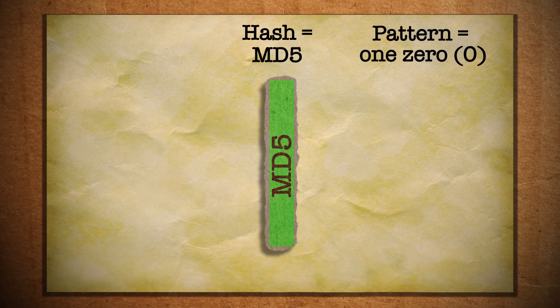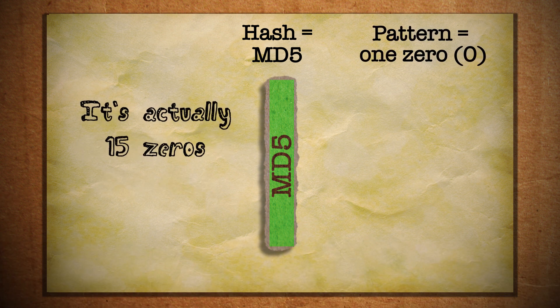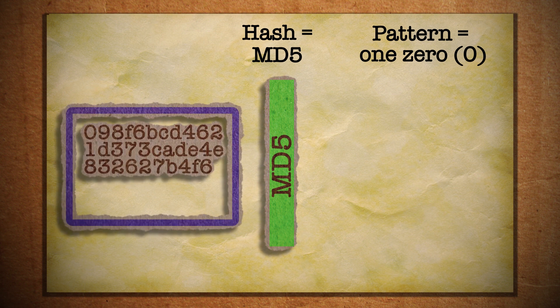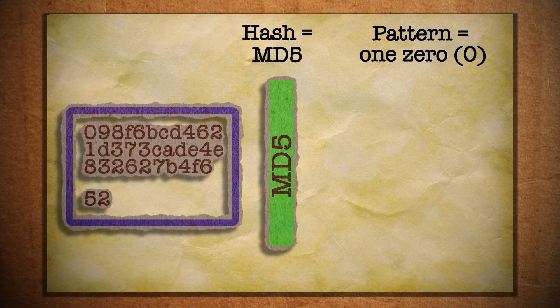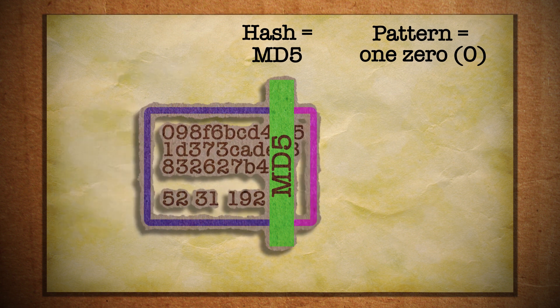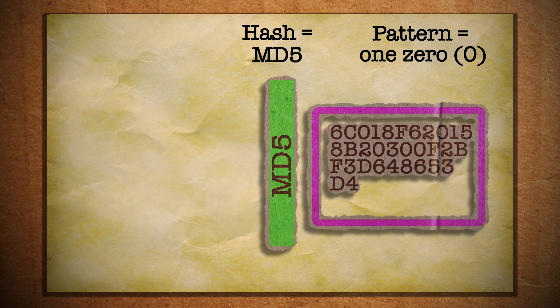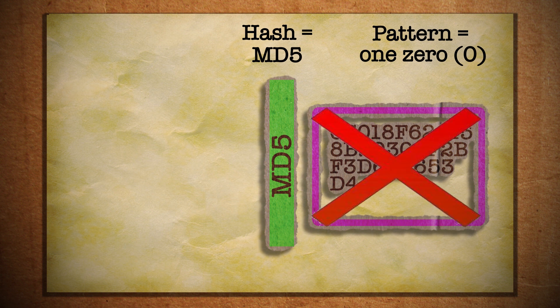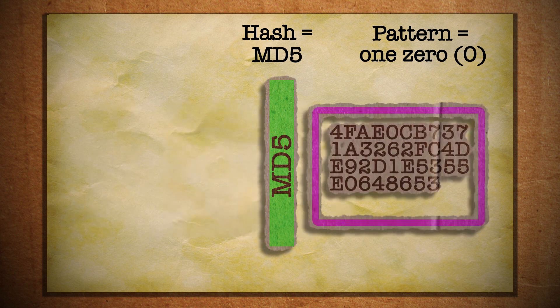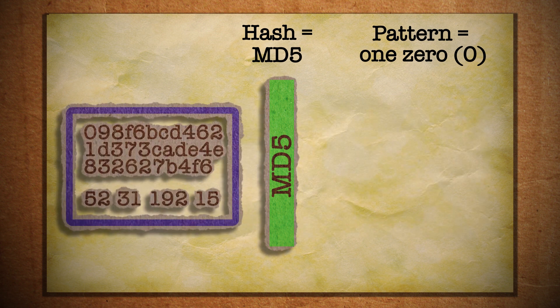The mining software takes the hash from the last successfully generated block and combines it with recent transactions and a reward transaction and a random number known as a nonce to make a new block. This is all run through the algorithm to see if it returns our pattern or not. If not, we change the nonce and try it again. This continues until it successfully returns our pattern.